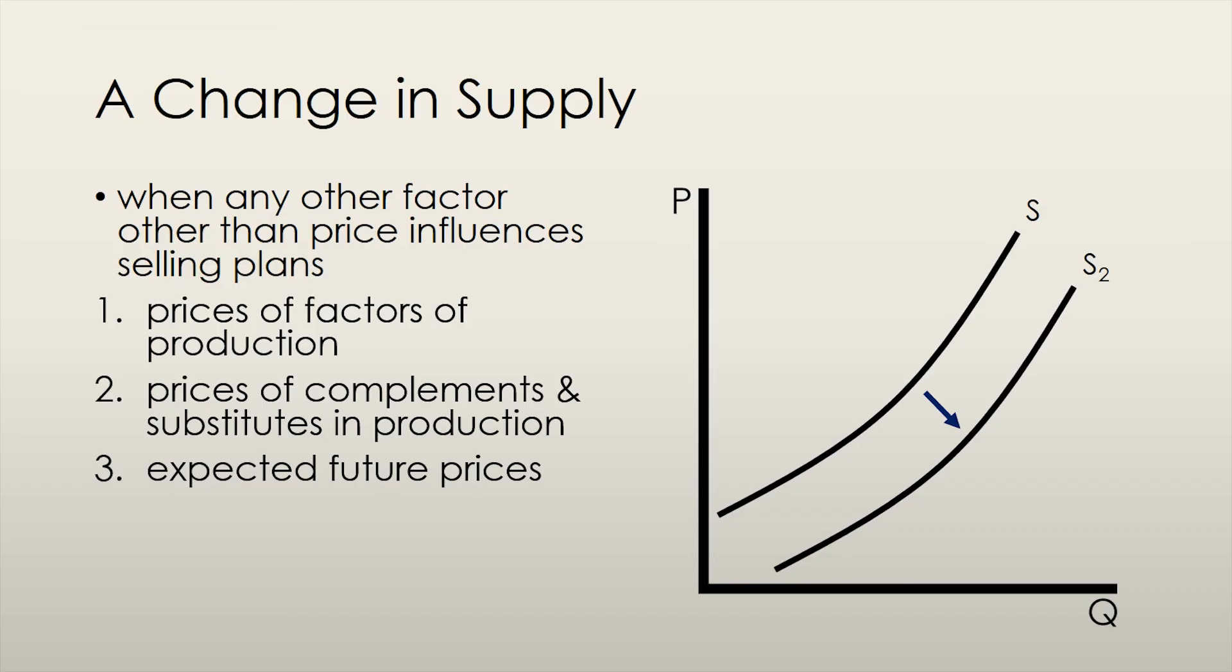Conversely, if the expected future price of a good fell, then the supply of that good today would increase. Firms would rather sell the good today when its price is higher to make greater profits.